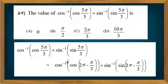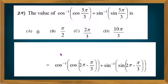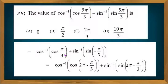Applying the allied angle formulae: cos(2π − x) = cos x, and sin(2π − x) = −sin x. Therefore, the expression simplifies to cos⁻¹(cos(π/3)) + sin⁻¹(−sin(π/3)), which is cos⁻¹(cos(π/3)) + sin⁻¹(sin(−π/3)).